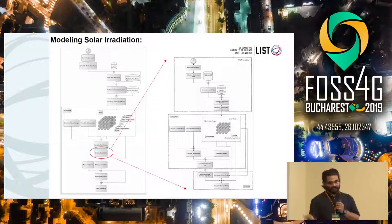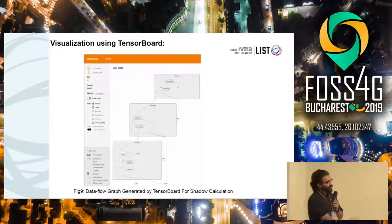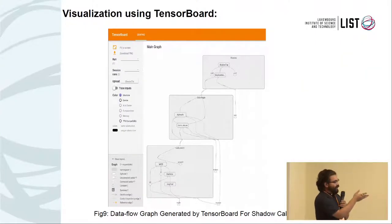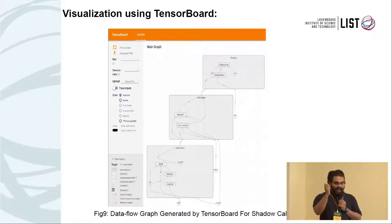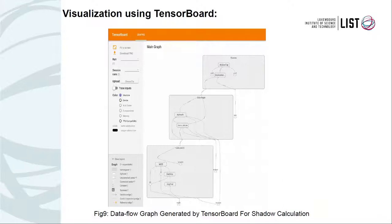This is the visualization of the computational data flow graph, called TensorBoard — it comes with TensorFlow. You can see your actual implementation as a graph, where nodes are tensors and arrows are the data flow. TensorFlow has inherent distribution and parallelism properties. We are using only CPU here; using GPU would make the code execute even faster, but we use only CPU for benchmarking purposes. This TensorBoard representation shows the shadow calculation module specifically.